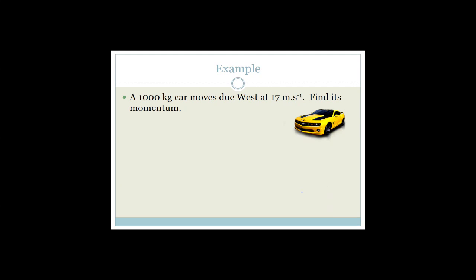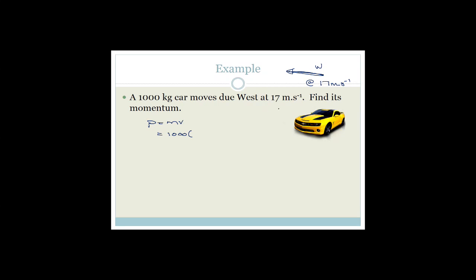Let's look at a basic example. A 1000 kg car moves due west at a speed of 17 m/s. Find its momentum. We know P = mv. The mass is 1000 kg and velocity is 17 m/s, so it's 17,000 kg·m/s. But if you leave your answer like that, you've done something wrong — you've left out the direction, which is west. The answer is 17,000 kg·m/s west.